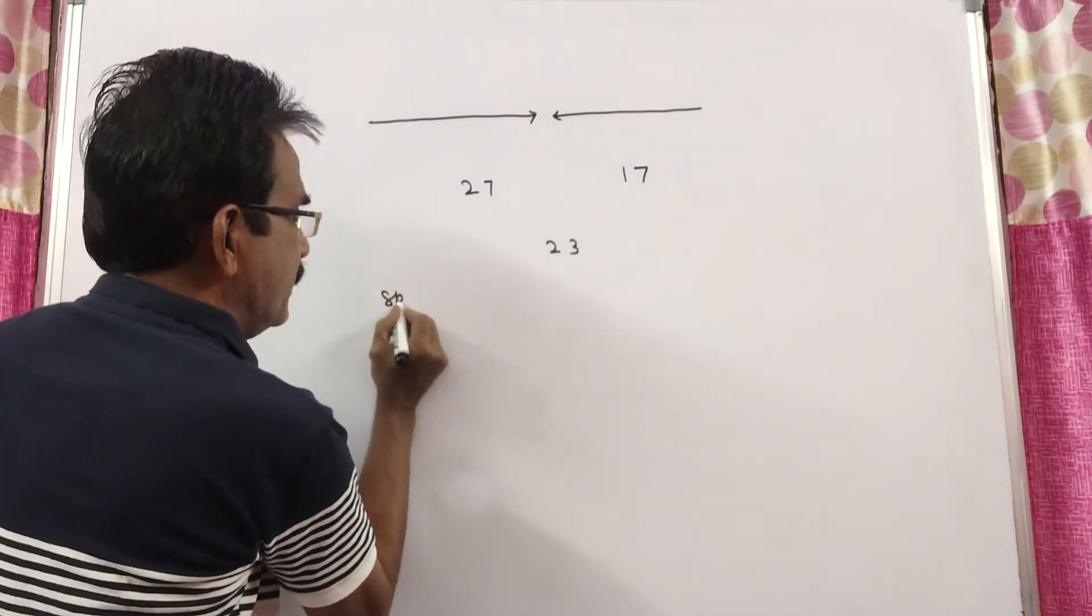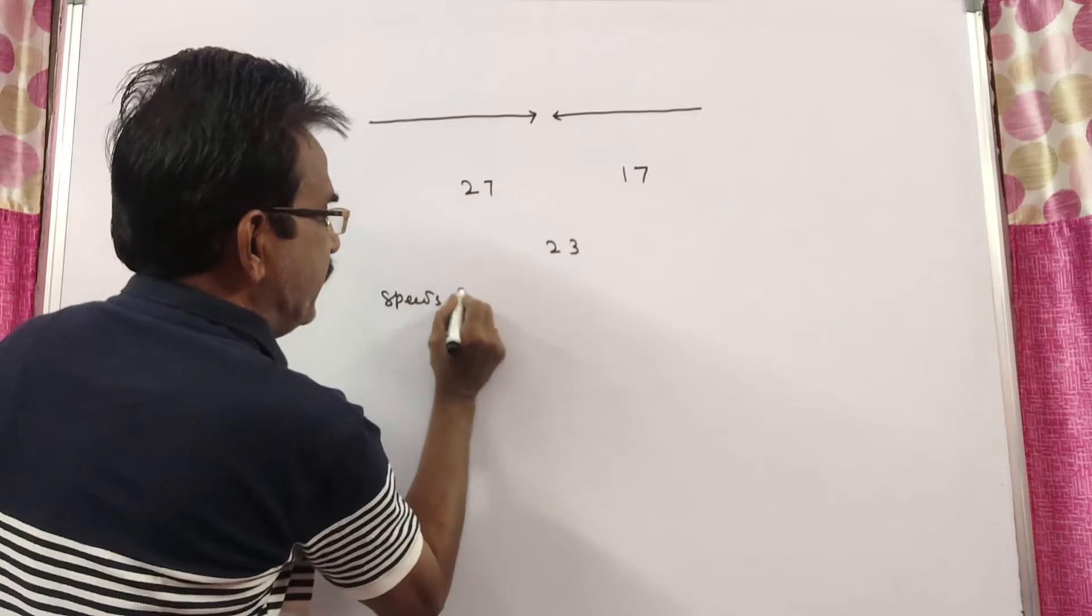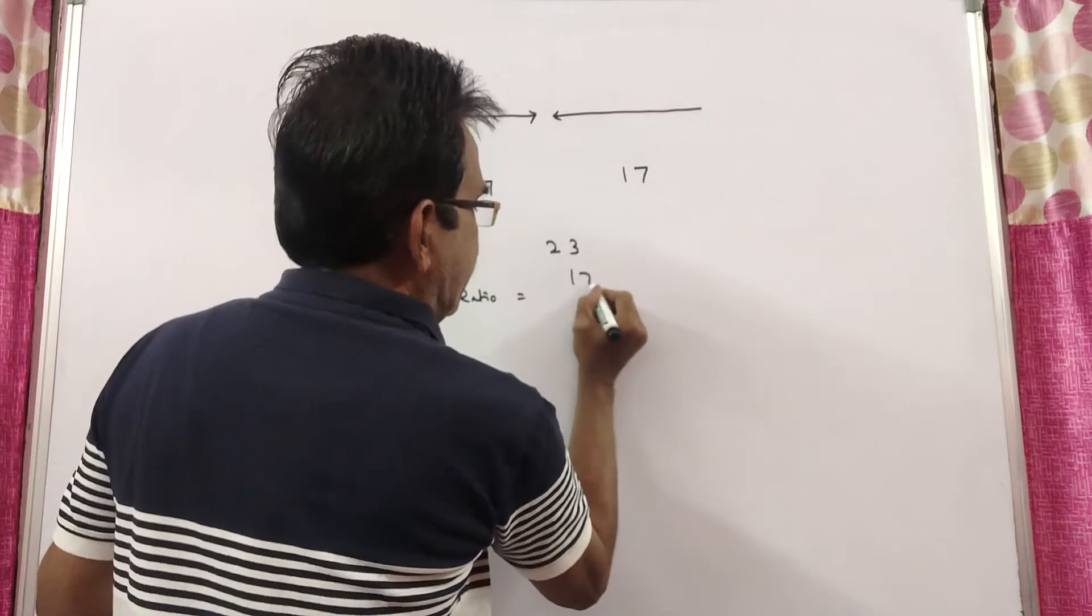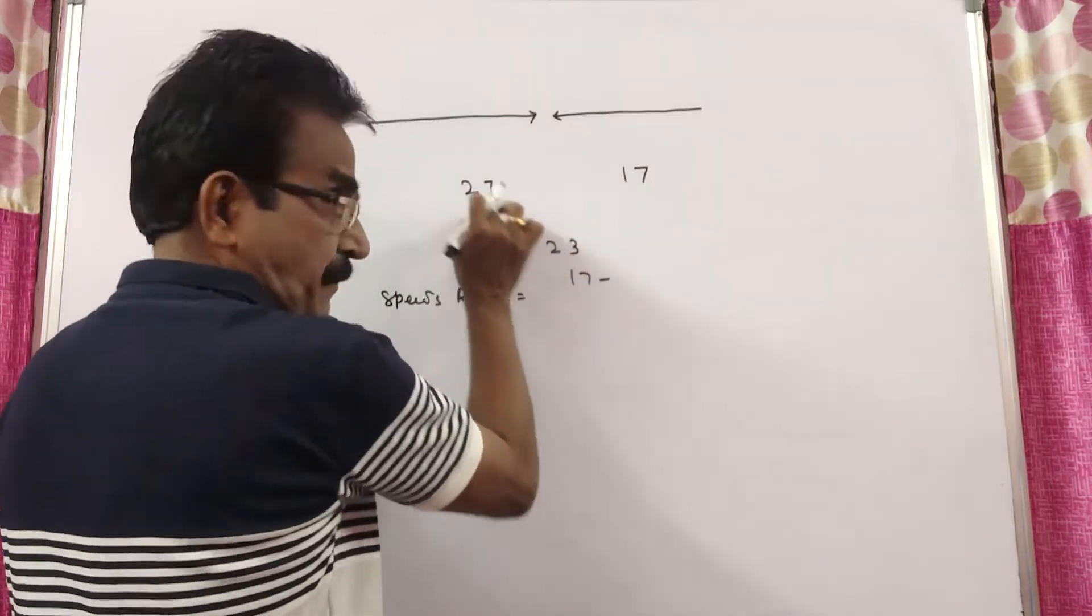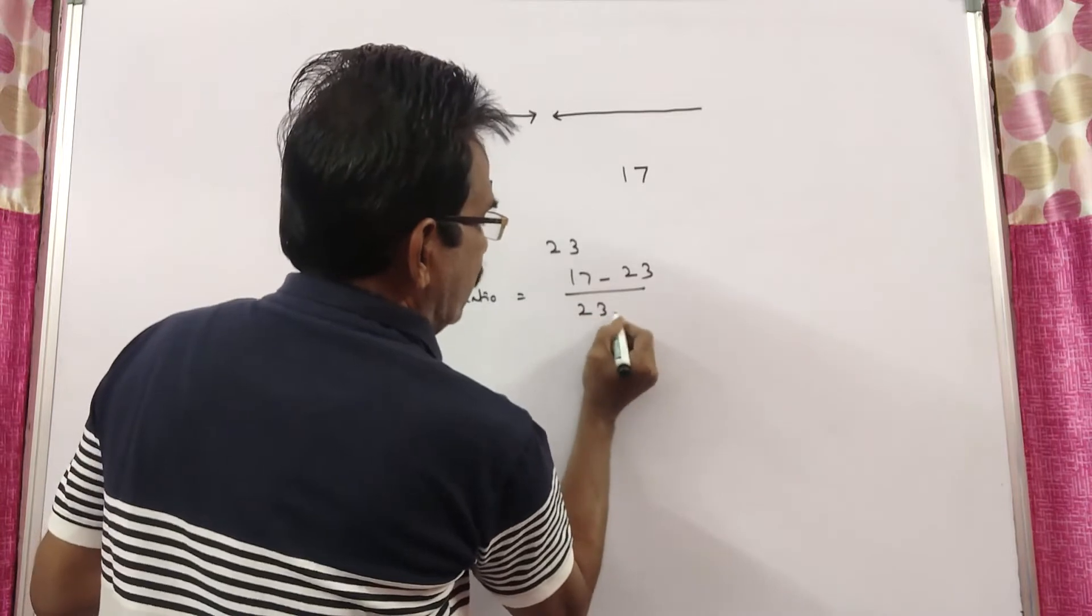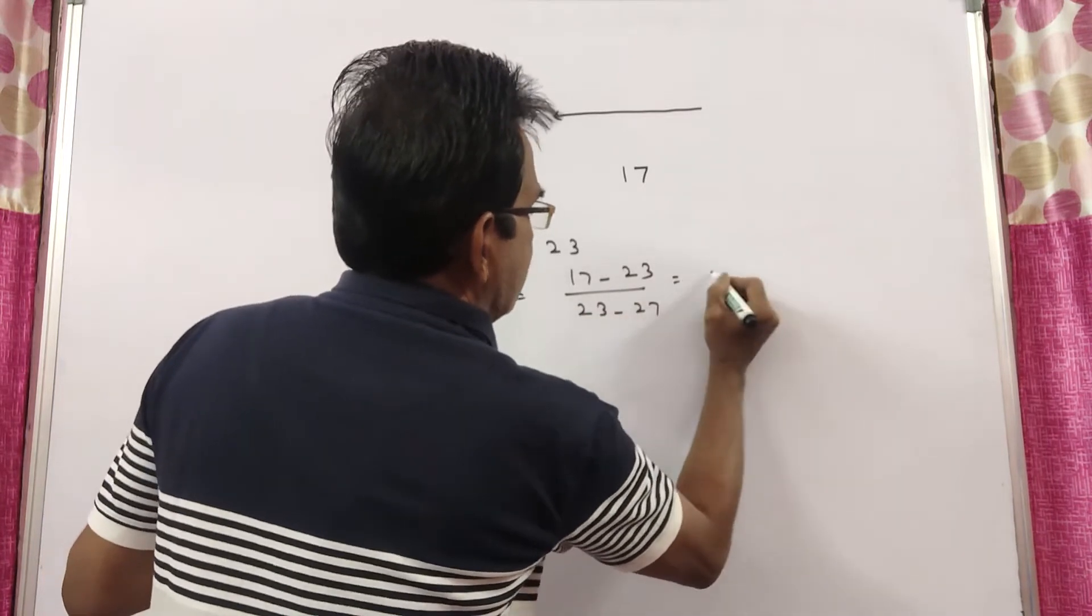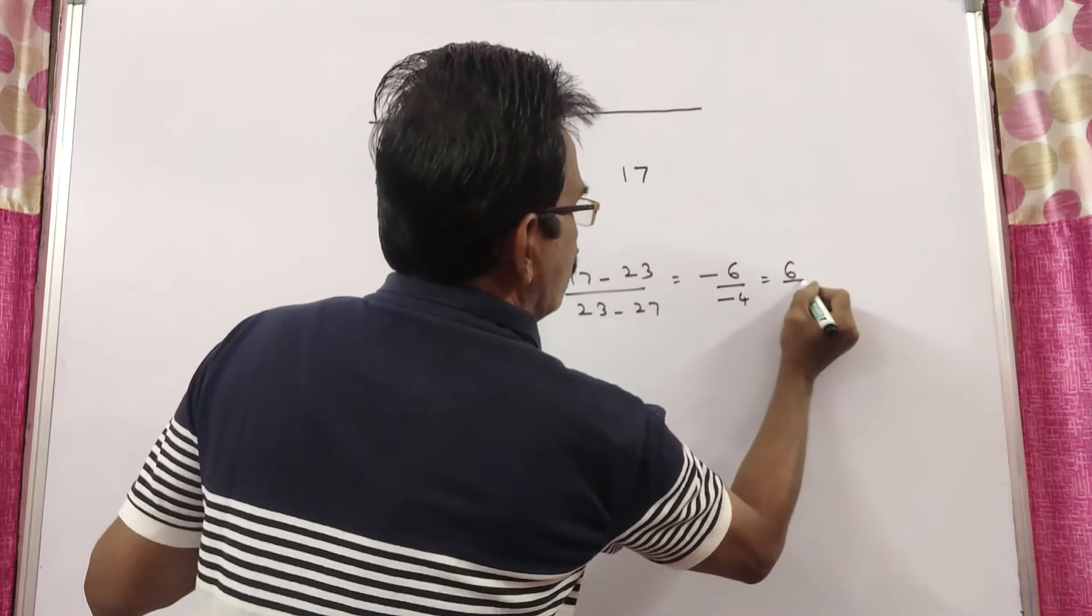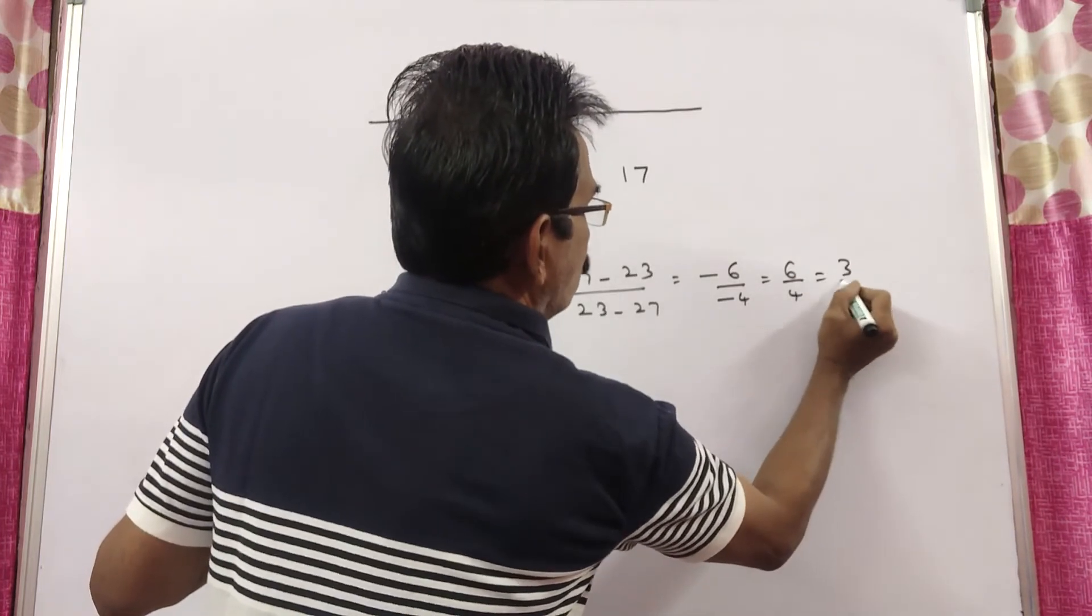So, ratio of their speeds equals 17 minus 23, this minus this by this minus this. Rule of allegation, friends. 23 minus 27. This is minus 6 by minus 4, that is equal to 6 by 4, that is equal to 3 is to 2.